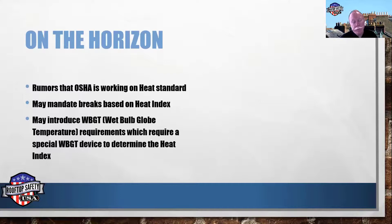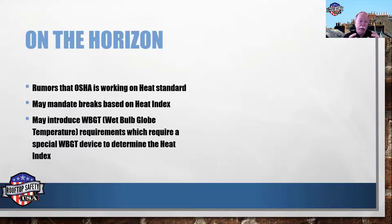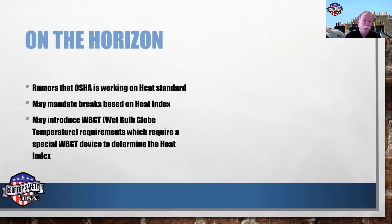On the horizon, OSHA is reportedly working on a heat standard. If developed, it will likely mandate breaks based on the heat index and may introduce wet bulb globe temperature requirements — meaning you'd need a physical monitoring device that measures temperature and humidity and gives you an accurate real-time heat index reading right on your work site. This device costs a couple hundred dollars and might be required. Frankly, it's surprising they haven't done it already.